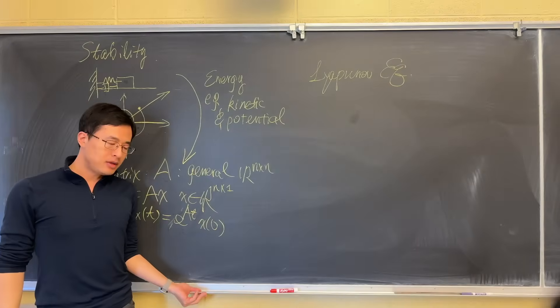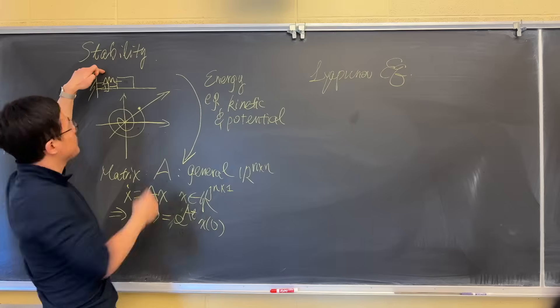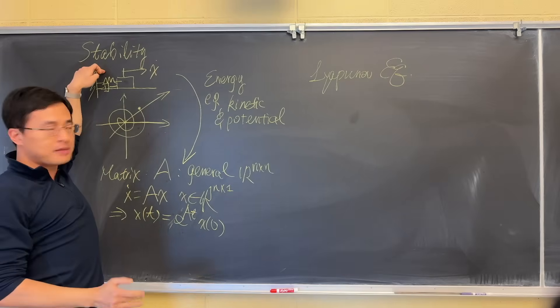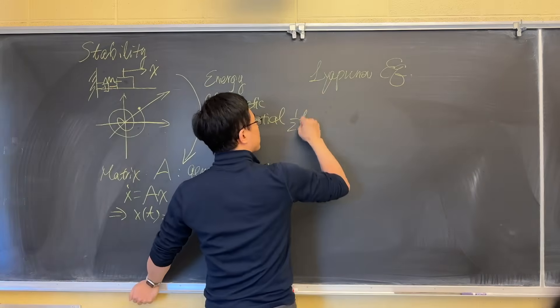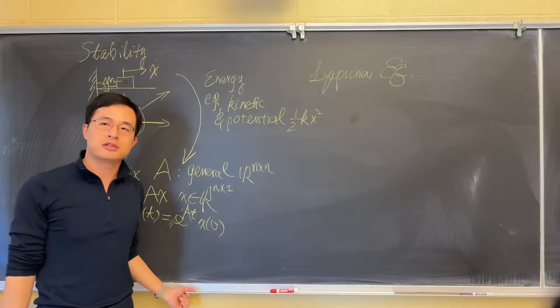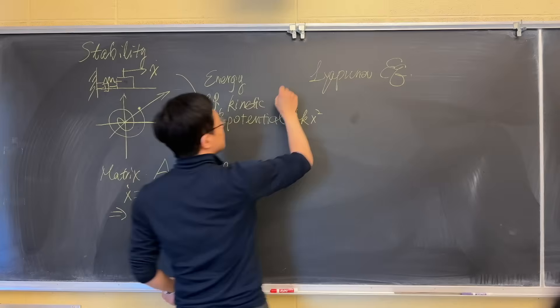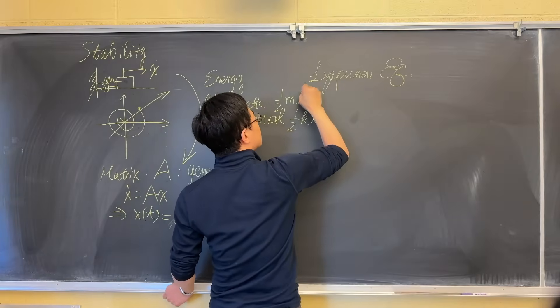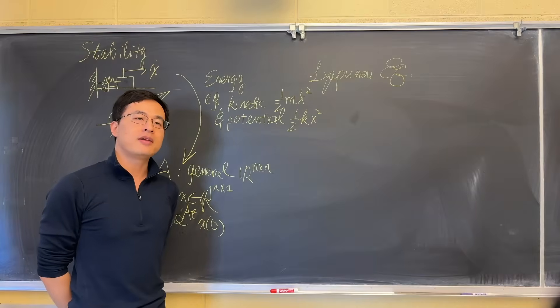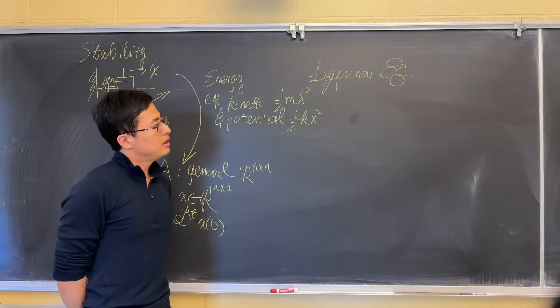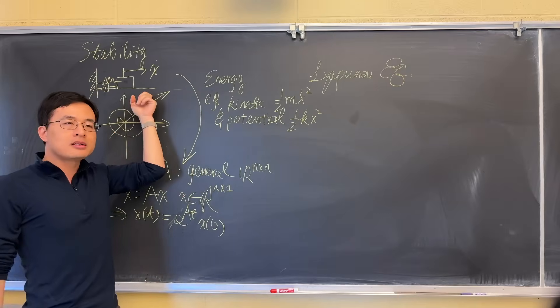How do we express kinetic energy and potential energy for this example? The potential energy is coming from the spring. If we say the position of the mass is x from the equilibrium point, then the potential energy is half of kx squared, where k is the spring coefficient. The kinetic energy depends on the velocity of the mass, which is half of its mass times the velocity squared, x dot squared. These two energy components define the total energy in this point mass.